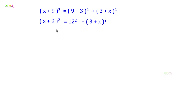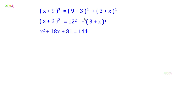Expanding using A plus B whole square equals A square plus 2AB plus B square: X plus 9 whole square gives X square plus 18X plus 81. And 12 square equals 144. And 3 plus X whole square gives 9 plus 6X plus X square. So the equation is: X square plus 18X plus 81 equals 144 plus 9 plus 6X plus X square.